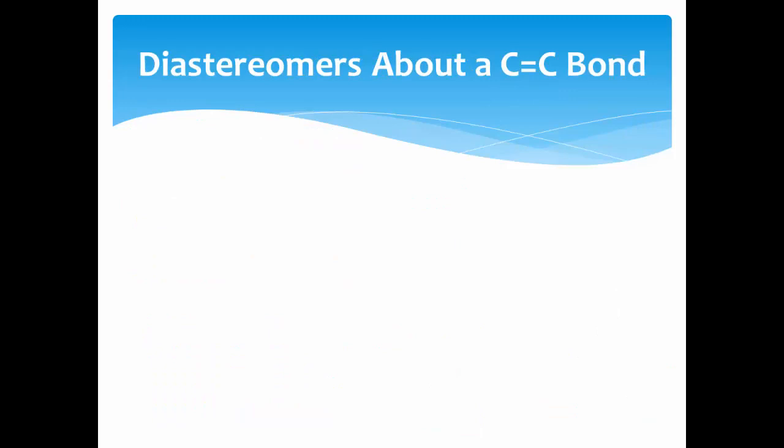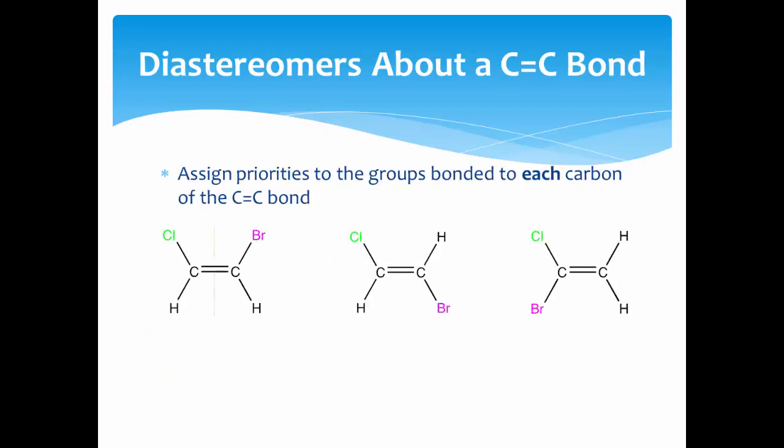There is also a way to classify diastereomers about a C=C double bond. To do this, assign priorities to the groups bonded to each carbon of the double bond. Again, priority is determined by atomic number.